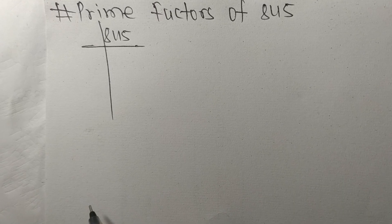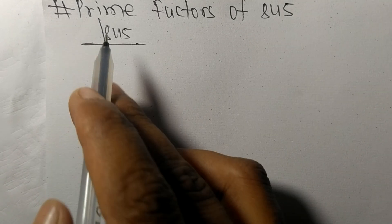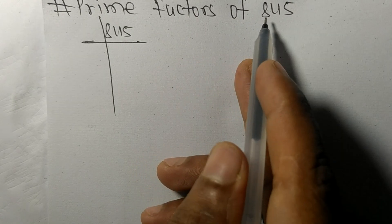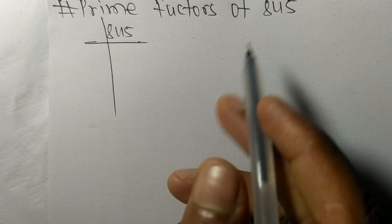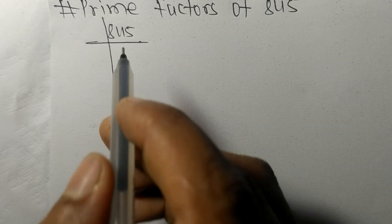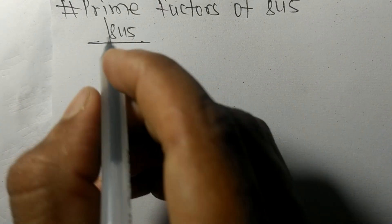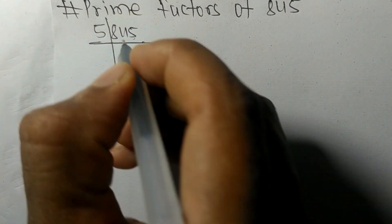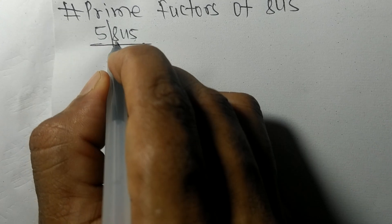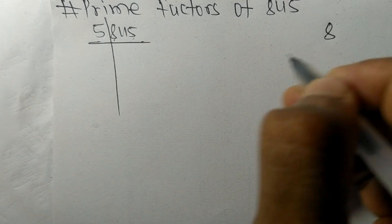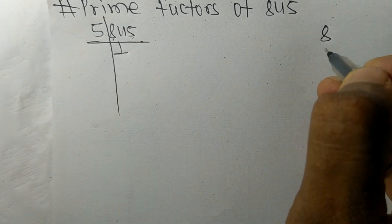Today in this video we shall learn to find the prime factors of 845. At last it contains 5, so this whole number is divisible by 5. First we have 8, so 5 times 1 means 5.